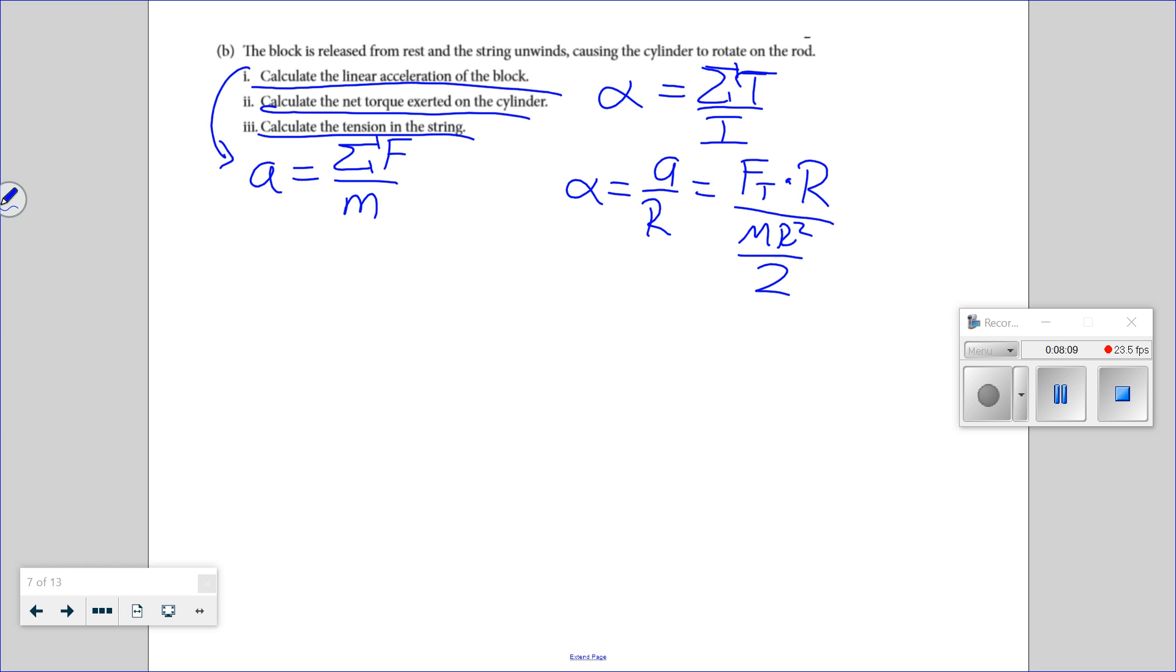The linear acceleration of the block has this force of tension. Look, I can actually kind of solve this one. Acceleration of the block is the force of tension pulling up, the tension will pull the opposite way. Plus the mass of the block times g, divided by the mass of the block. That's the acceleration of the block. Now they're attached, so they have to have that relationship.